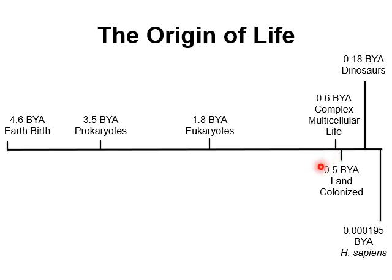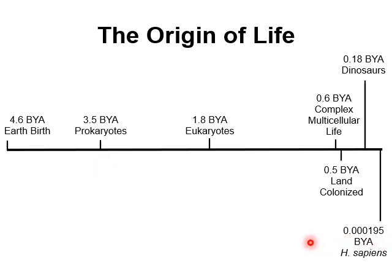About half a billion years ago, land was first colonized by plants and then later by animals. Dinosaurs came along about 0.18 billion years ago and went extinct 0.06 billion years ago — 60 million years ago. Our species came around only very recently: we are 0.000195 billion years old, or 195,000 years old, compared to prokaryotes that have been around for three and a half billion years.